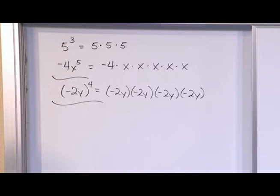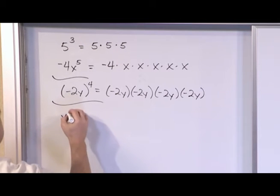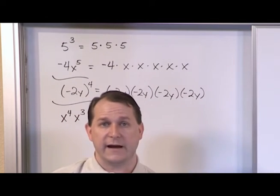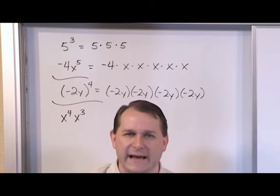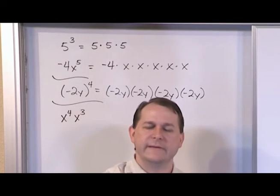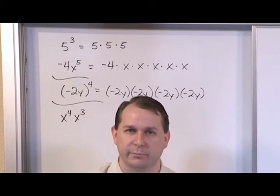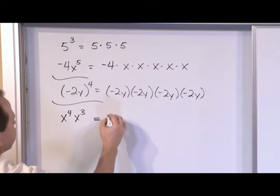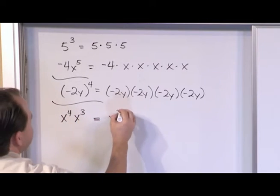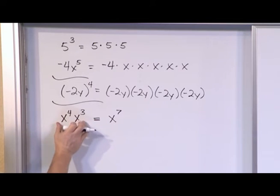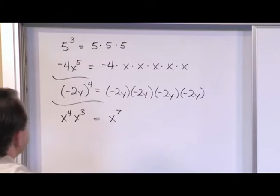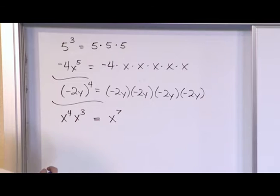Now let me get to the first thing we're really going to learn in this section. What if you were simplifying something like x to the fourth multiplied by x to the third? You want to simplify that. When you're multiplying exponents, all you do is keep the base — the x — and add the exponents together. So what you'll get is x to the seventh. That is the simplification, combining these things together into one thing. And I'll show you how this makes total sense.